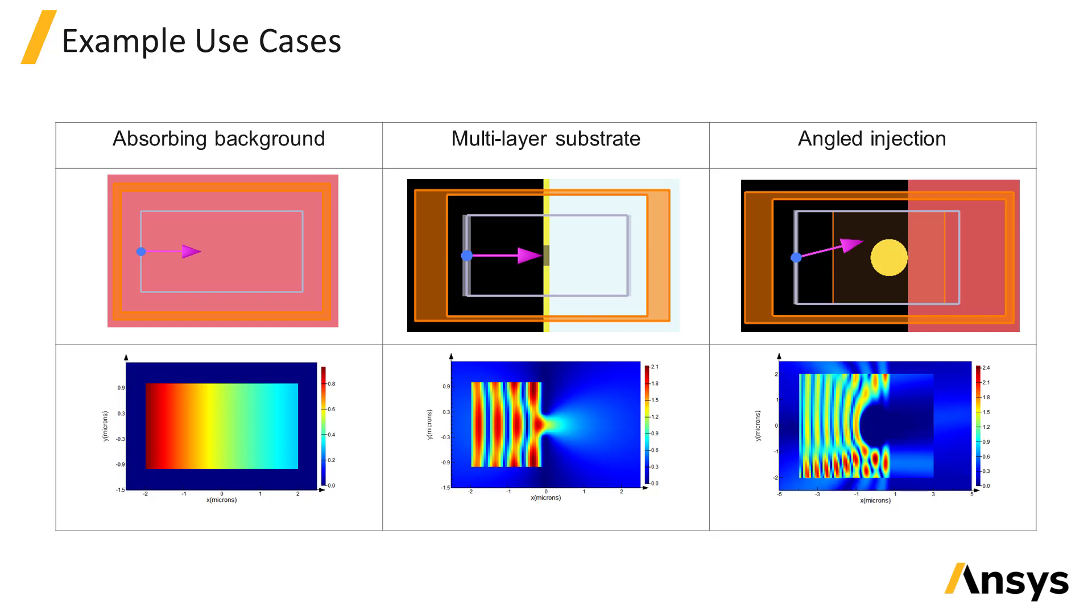The total field scattered field source works with absorbing materials and anisotropic materials, and it works with multi-layered substrates. It can also be used to simulate standalone scattering objects or periodic structures in conjunction with periodic or block periodic boundary conditions.